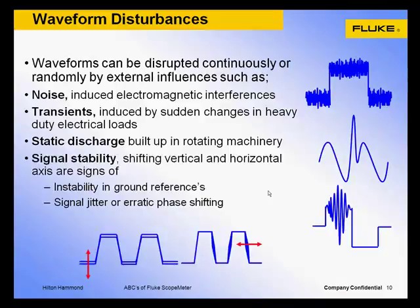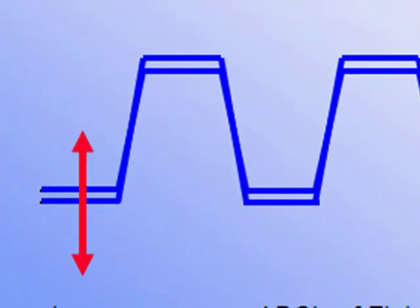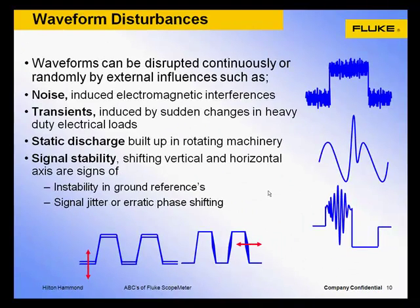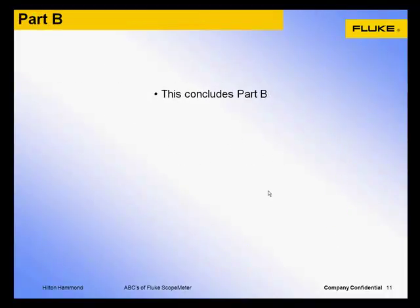Signal stability: check for shifting vertical or horizontal axes. Any instability in ground references or DC offset changes could indicate earth ground loop problems. Any horizontal time-related signal jitter or erratic phase shifting could be the result of problems in digital circuit clocks and signal transmission pathways. This concludes part B on analyzing waveforms. Next we will review some techniques and functions to capture intermittent random events.